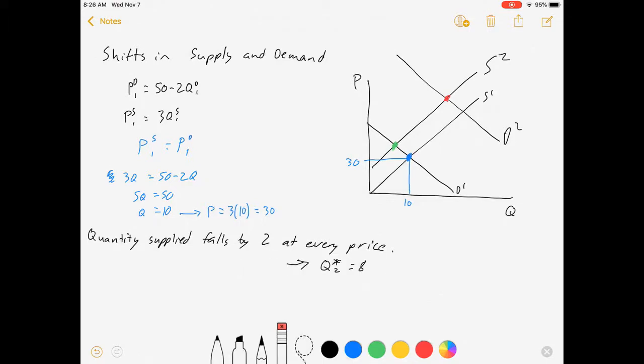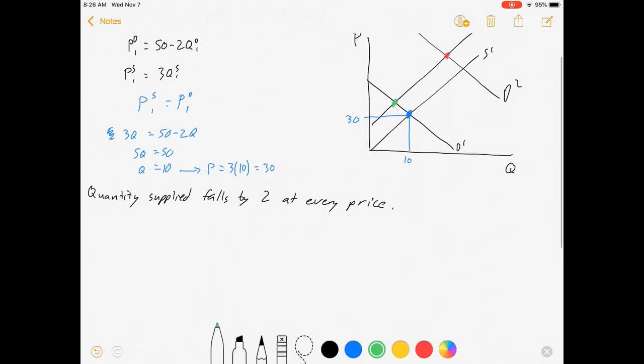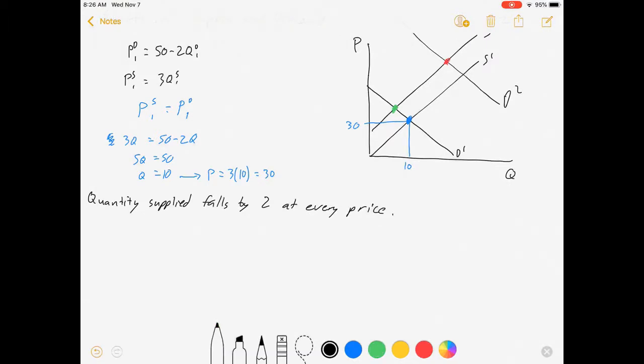We actually have to do some math here. We're going to solve for a new supply curve and see what the new equilibrium is. We're changing the quantity, but our supply curve is currently measured in price as a function of quantity. So first thing we've got to do is invert it. We know that ps1 is equal to 3 qs1, which means 1 over 3 ps1 is equal to qs1. Now we've got something where q is a function of p.